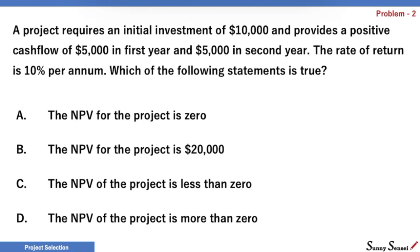A: The NPV for the project is zero. B: The NPV for the project is $20,000. C: The NPV of the project is less than zero. D: NPV of the project is more than zero. Again, please pause the video and try it yourself.